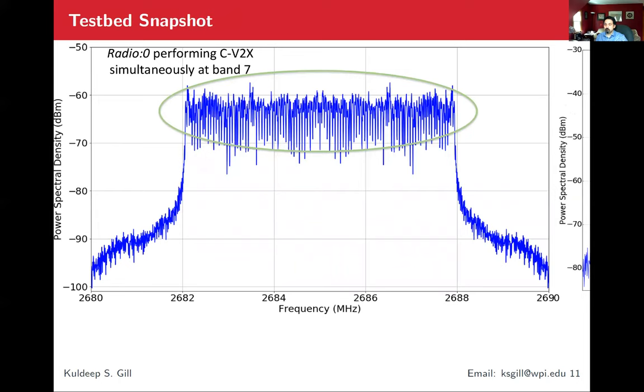This is radio zero performing CV2X. Since we are employing five megahertz, there are only 25 physical resource blocks which are used. Radio zero is doing that. We have also run for 10 megahertz which employs 50 physical resource blocks to compare how they both perform.